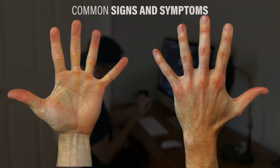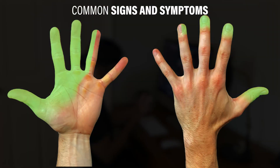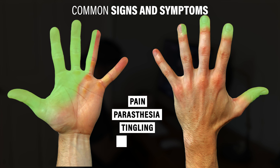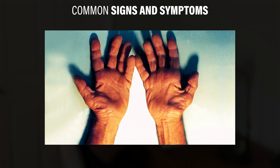It is often characterized by pain, paresthesia, tingling, and/or numbness along the median nerve distribution in the hand and fingers, and has a tendency to worsen at night. In more severe cases, it can lead to muscular weakness and atrophy of the thumb muscles.